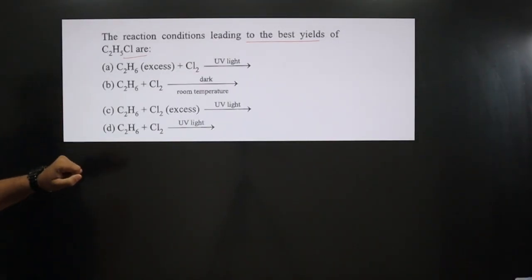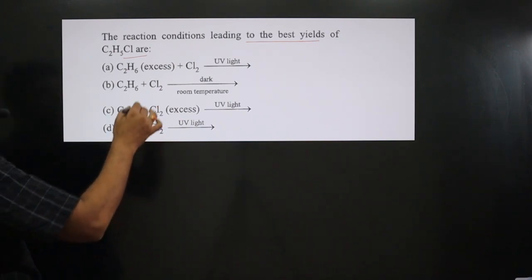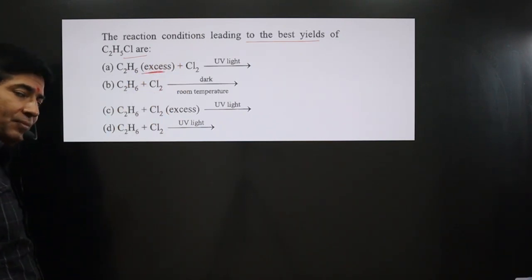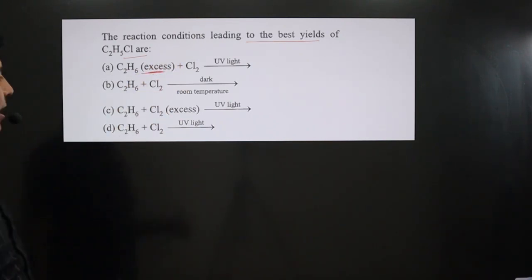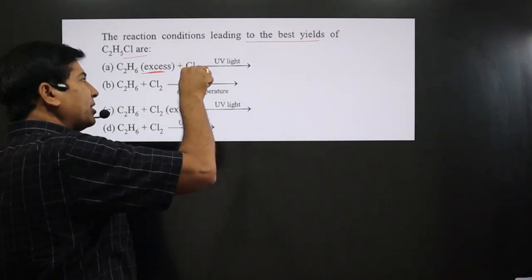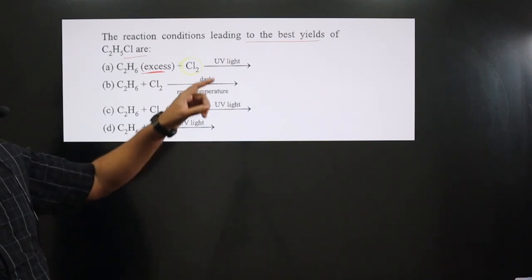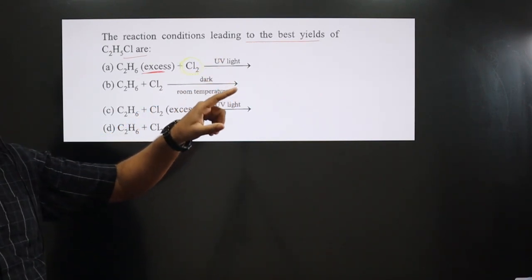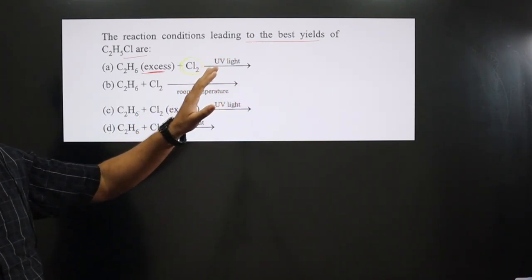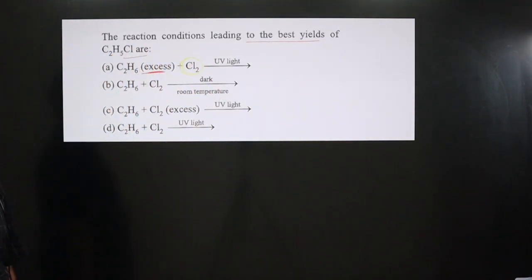In the first option, ethane is given in excess and Cl2 is given in limited quantity. The reaction is taking place in the presence of UV light, meaning sunlight, and hence the reaction will be taking place via free radical mechanism.